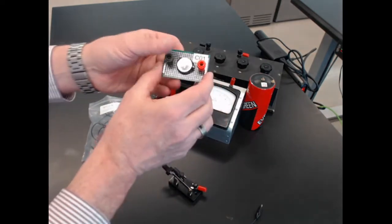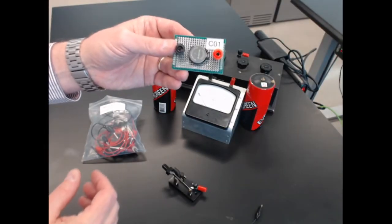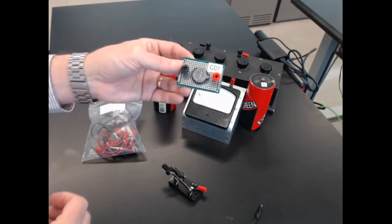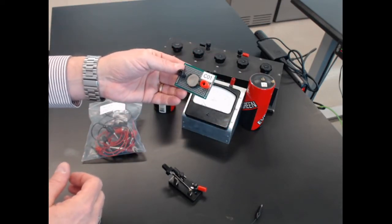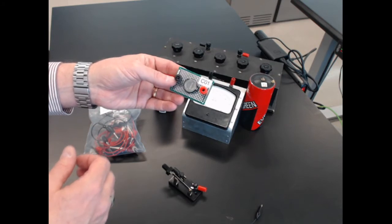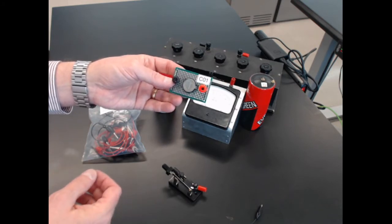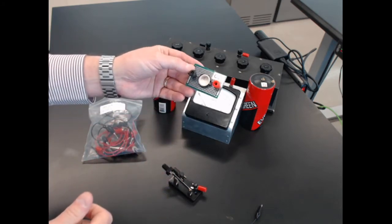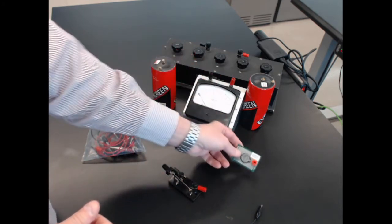Here's a coin cell, a CR2032. They're all labeled. This one has a chemistry that has a high internal resistance just by design. It's for low current uses, and we'll try and measure the internal resistance of this device as well.